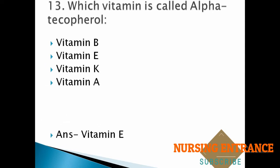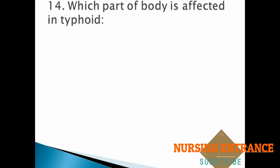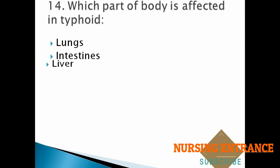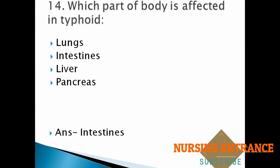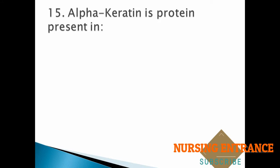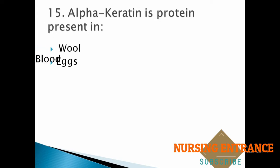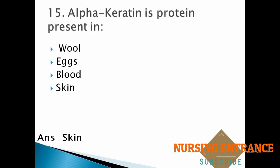Question number thirteen: which vitamin is called alpha-tocopherol? The correct answer is vitamin E. Question number fourteen: which part of the body is affected in typhoid? The correct answer is intestines. Question number fifteen: alpha keratin is a protein present in skin. The correct answer is skin.